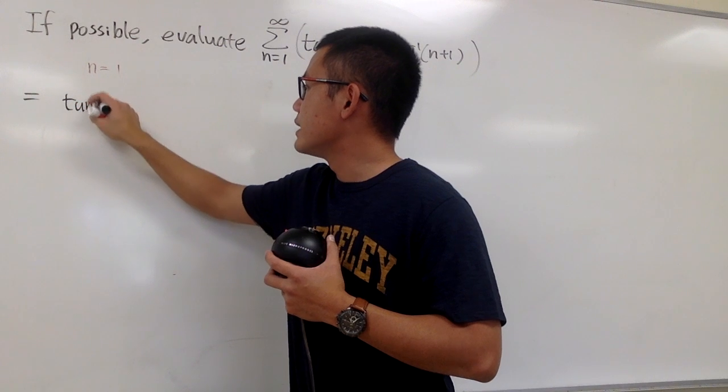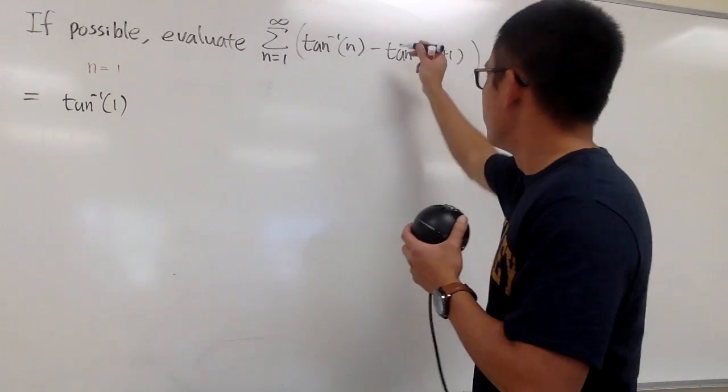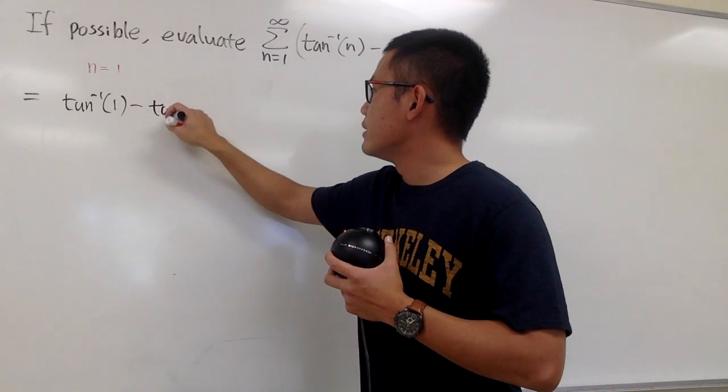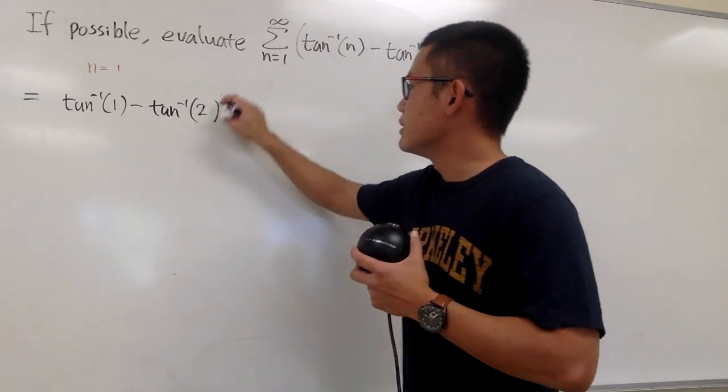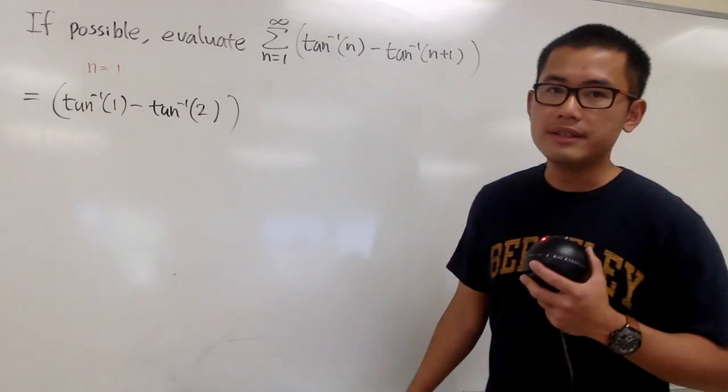First term, we will have the inverse tangent of 1, and then minus the inverse tangent of 1 plus 1, which is 2. So this is the first term when n is equal to 1.